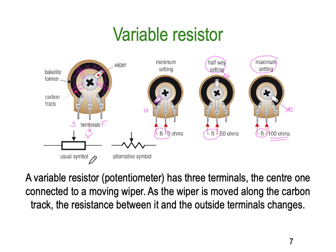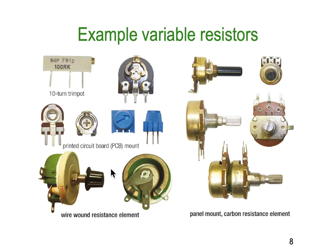There are a couple of ways to draw a variable resistor. The modern easy way is a rectangle with an arrow at the center — the arrow indicates it is variable. The alternative is the traditional wiggly line with an arrow at the center. A variable resistor is also called a potentiometer. It has three terminals: the center one connected to the moving wiper, and as the wiper moves along the carbon track the resistance between it and the two outer terminals changes.